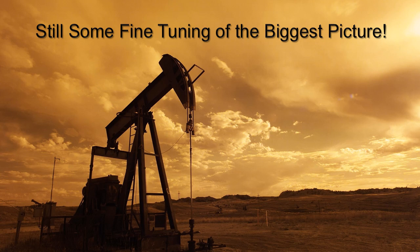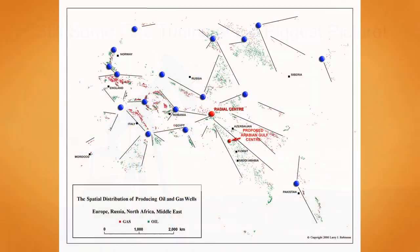Some fine-tuning of the biggest picture. Each blue dot is a proposed radial center. Note that the radial centers in northern Russia appear to have separated from the radial arms themselves. By closing the eastern Mediterranean Sea, the partial radial patterns in southern Europe have been completed. For example, the arrow pointing from radial center to Egypt is now a complete radial arm. And those oil and gas deposits in Libya are obviously part of a radial pattern with the center at the very southern end of Italy.